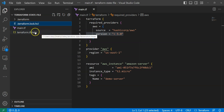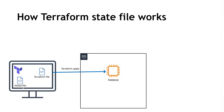So the definition: the Terraform state file is a file which contains current running environment information provisioned by Terraform. Now, our state file is located in the local system, but keeping it there is not advised. If your system gets corrupted or you accidentally delete this file, you won't know what infrastructure is running, and terraform apply will try to reproduce everything — creating a mess.